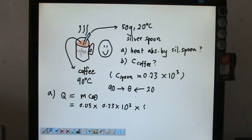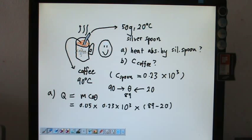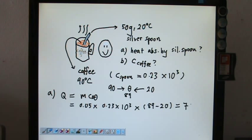The final temperature is given in the question as 89 degrees Celsius. So the change in temperature is 89 minus 20. This gives us a value of 0.7935 kilojoules, which is equivalent to 793.5 joules.